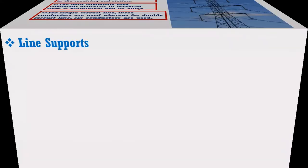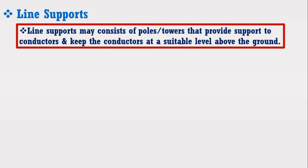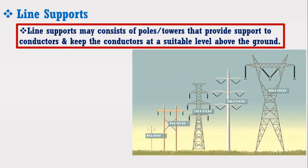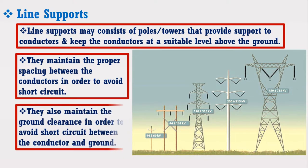Now I am going to discuss about the line supports of the transmission line. Line supports may consist of poles and towers that provide support to conductors and keep the conductors at a suitable level above the ground. Consider the figure which shows different line supports consisting of poles and towers suitable for different voltages. They maintain the proper spacing between the conductors in order to avoid any short circuit. They also maintain the ground clearance in order to avoid short circuit between the conductors and ground.